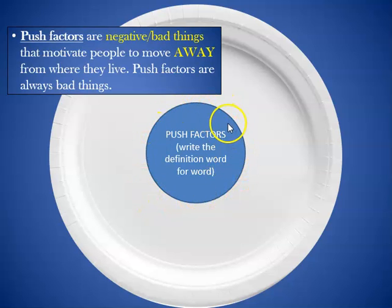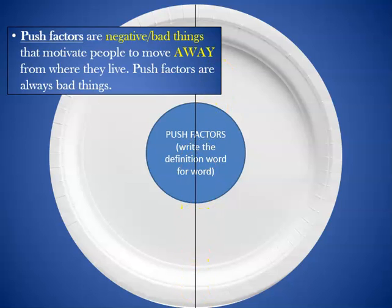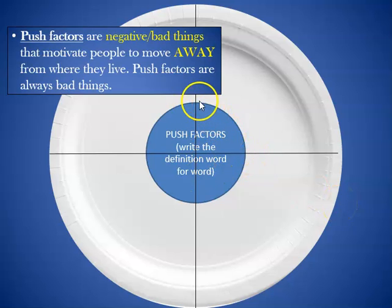Try to make this circle about the same size so you have plenty of room on the outside of the plate. Once you've done that, take a pencil or a marker and draw a line this way, then draw a line this way. If you don't want to draw the line through the words, you can stop the line at the edge of the circle — that's completely fine.